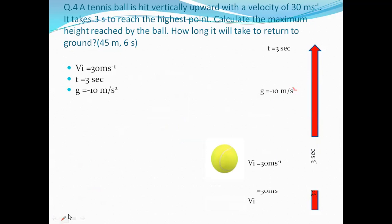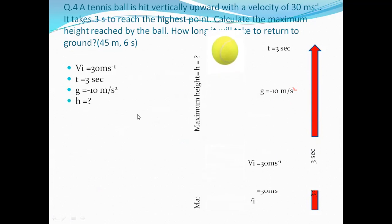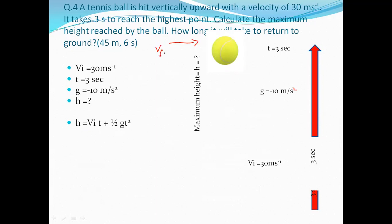At maximum height, the final velocity Vf equals zero, because the ball momentarily stops before coming back down. Using the second equation of motion with H replacing S: H = VI·T + ½gT². Substituting: H = 30×3 + ½×(-10)×(3)² = 90 + (-45) = 45 meters.